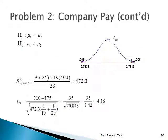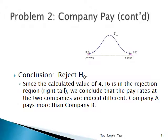H0 is mu1 equals mu2, and H1 is that mu1 is not equal to mu2. It's a T28, because you lose two degrees of freedom. First you calculate s-squared pooled, which comes out to 472.3. Then you apply the formula and get a T28 of 4.16. Since 4.16 is way beyond the critical value of 2.7633, it's in the rejection region. We conclude that the pay rates of the two companies are indeed different — Company 1 pays more than Company 2, and there is a statistically significant difference.